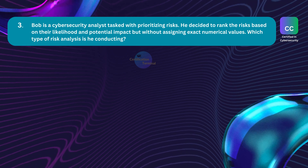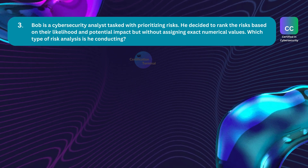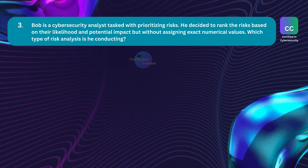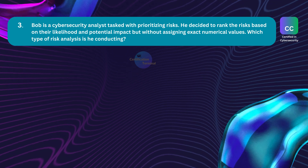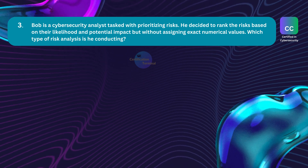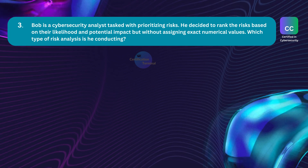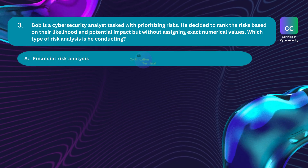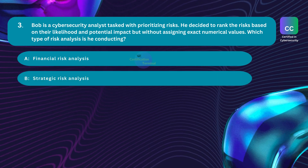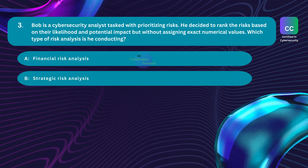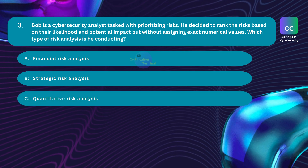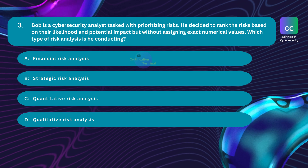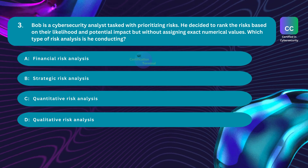Question number three: Bob is a cybersecurity analyst tasked with prioritizing risks. He decided to rank the risks based on their likelihood and potential impact, but without assigning exact numerical values. Which type of risk analysis is he conducting? Option A: financial risk analysis. Option B: strategic risk analysis. Option C: quantitative risk analysis. Option D: qualitative risk analysis. The correct answer is Option D — qualitative risk analysis.